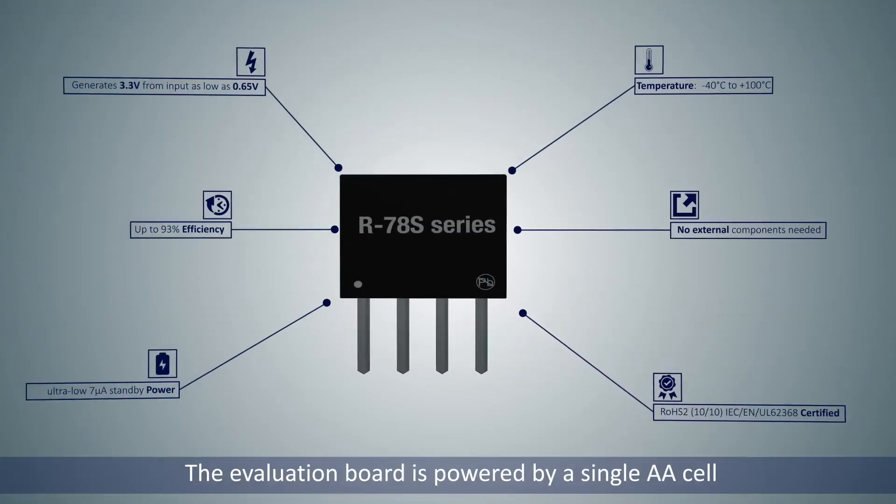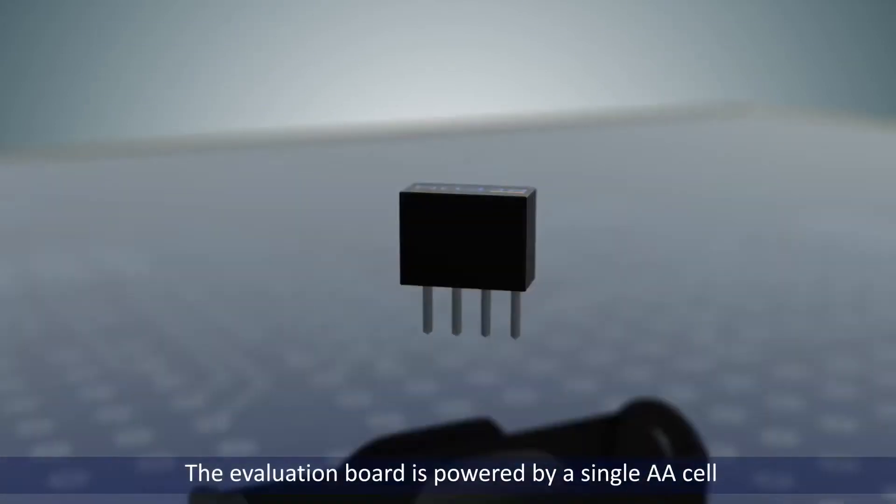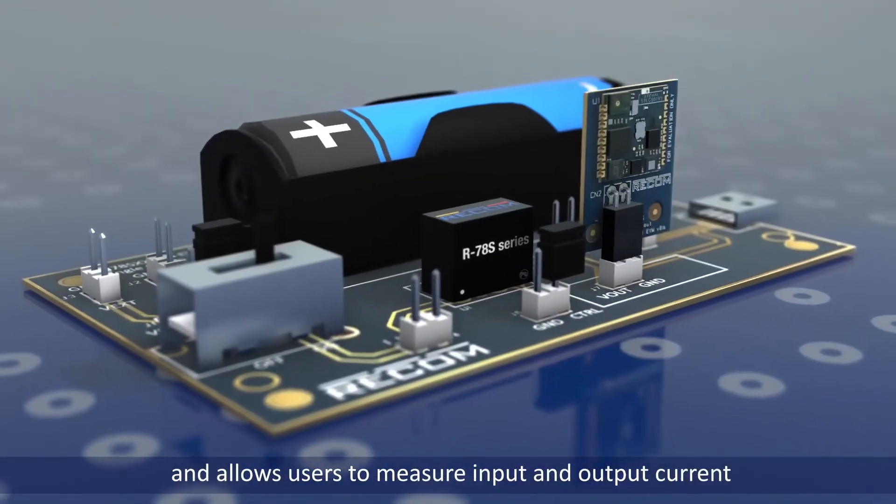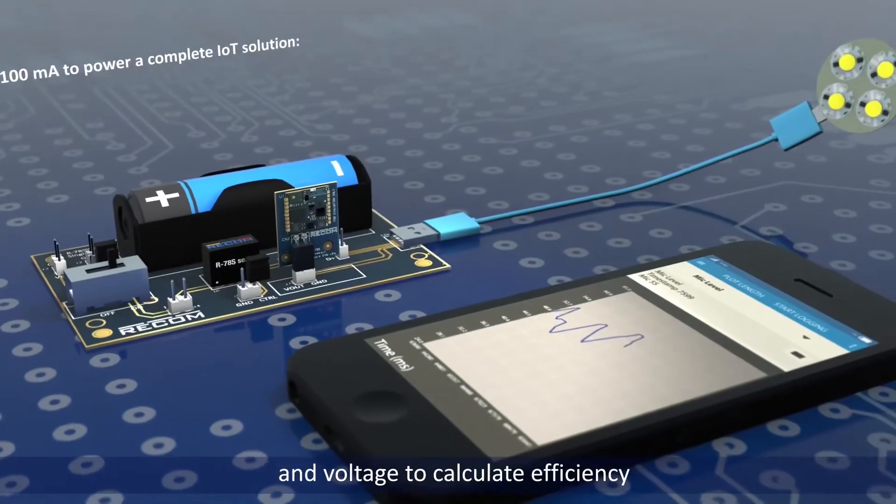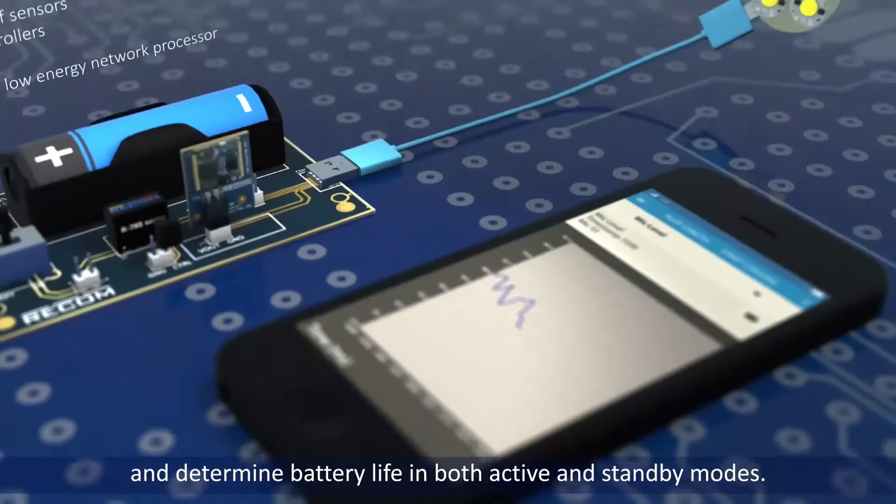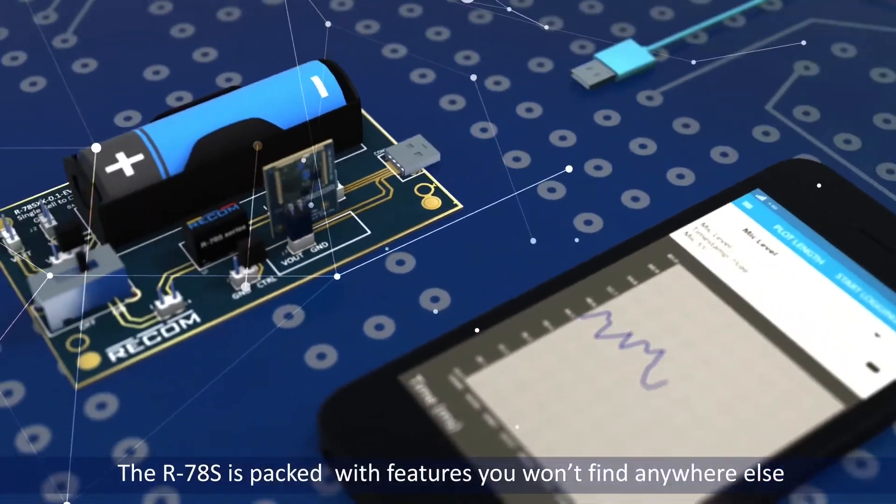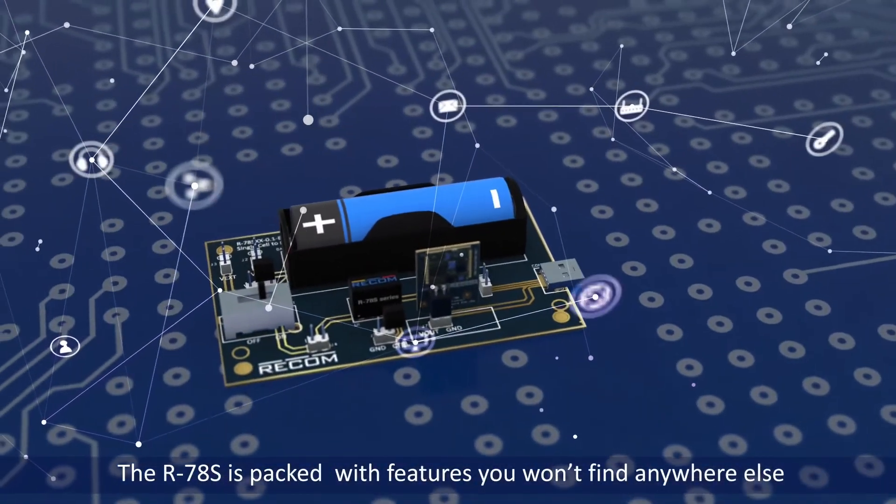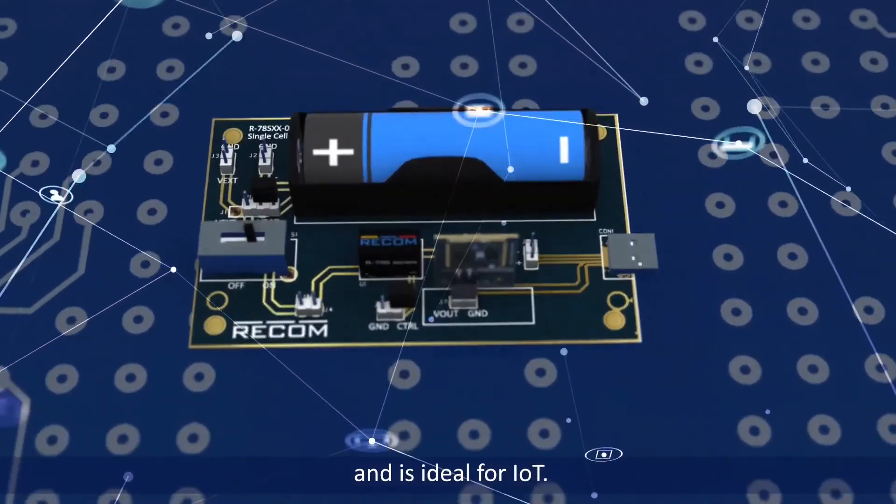The evaluation board is powered by a single AA cell and allows users to measure input and output current and voltage to calculate efficiency and determine battery life in both active and standby modes. The R78S is packed with features you won't find anywhere else and is ideal for IoT.